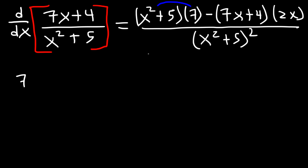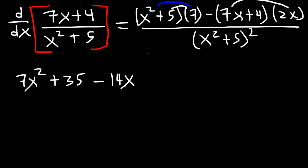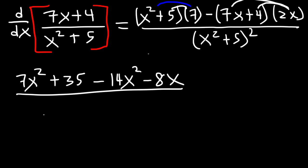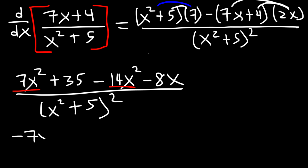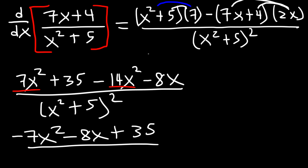Let's distribute the 7: x squared times 7 is 7x squared, and 7 times 5 is 35. Then 2x times negative 7x is negative 14x squared, and 2x times 4 with the negative sign in front is negative 8x, all divided by x squared plus 5 squared. Now let's combine like terms: 7x squared minus 14x squared is negative 7x squared.